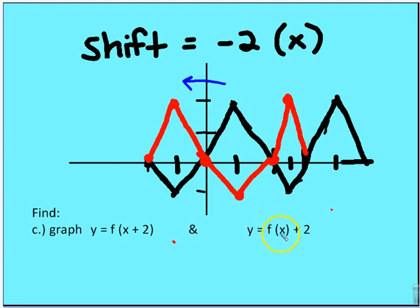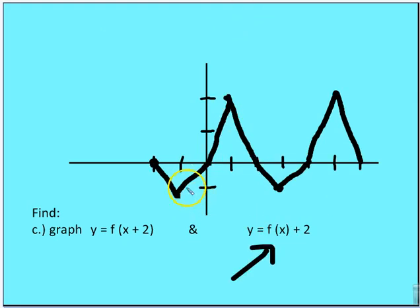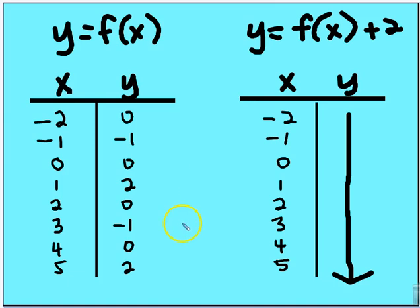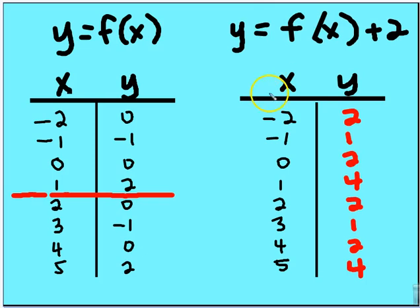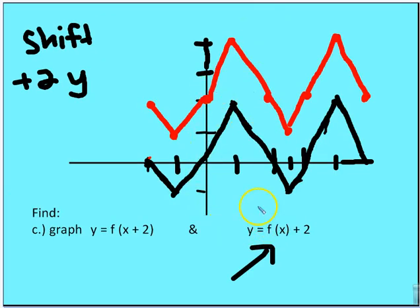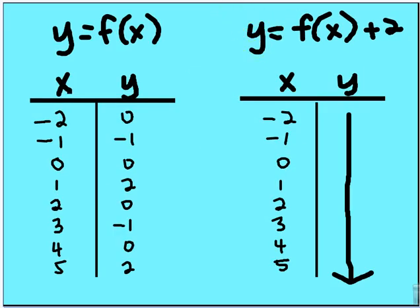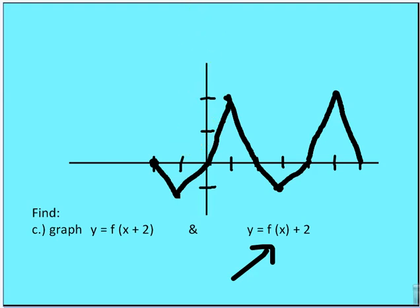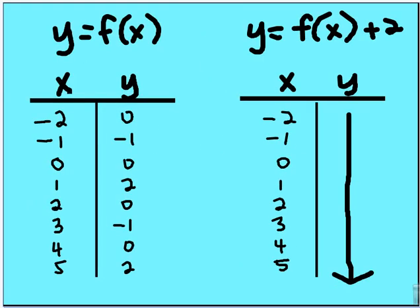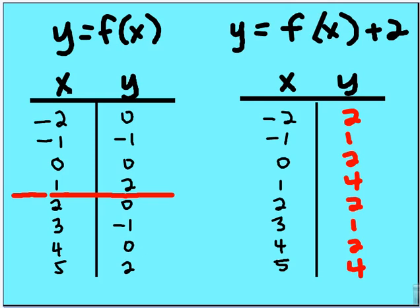For the next function, y equals f of x plus 2 with the 2 outside the parentheses, we create our table and graph it. You can see that the graph shifts y up by 2 units. So in the first case we had a horizontal shift of negative 2, and in the second we had a positive vertical shift of 2.